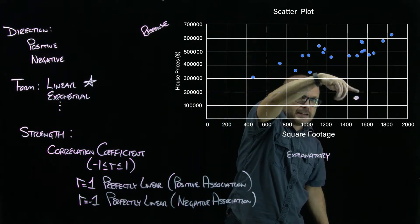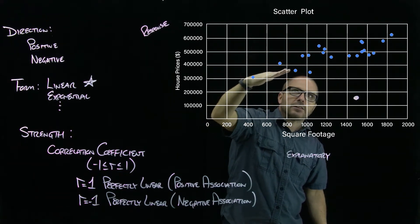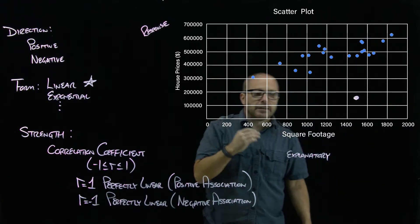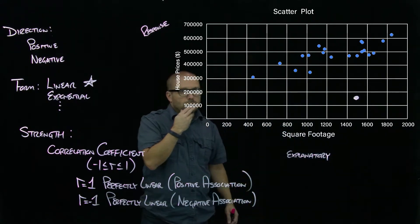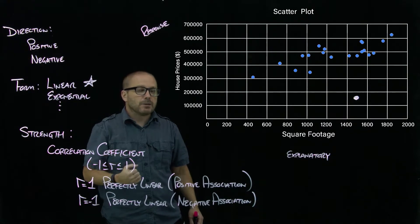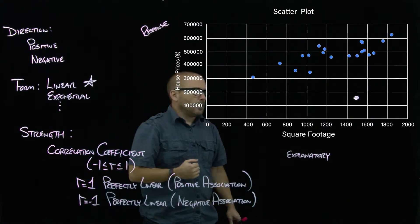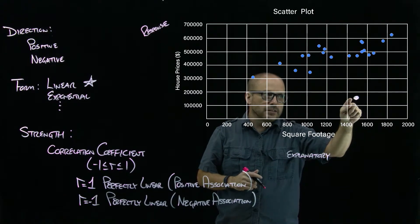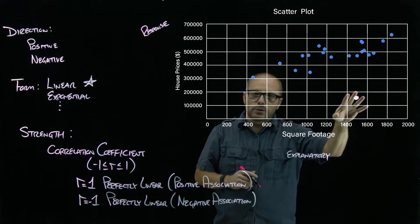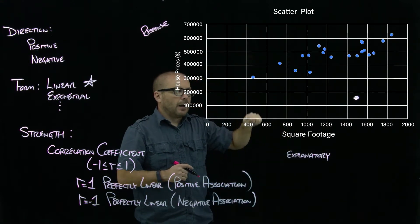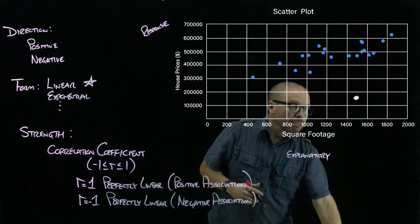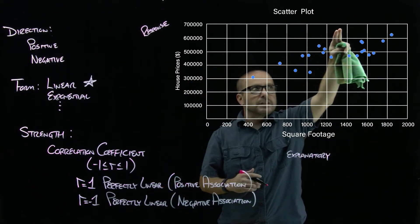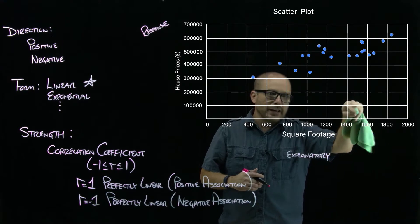So that one dot, because it's so far away from everything else, is going to have a tendency to pull our model away from it, and that may sort of destroy any linear relationship that we thought we were seeing. So we have to think about how we want to handle these influential values—is this something we want to include in our analysis? Because without it...